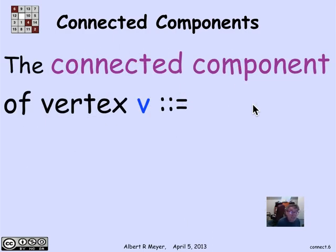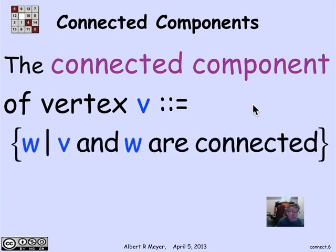The formal definition of the connected component of a vertex V is simply all of the vertices W that are connected to V. And if you look at these connected components, they define an equivalence relation on the vertices, because a connected component is a block of the equivalence relation. It's a block of the partition associated with the equivalence relation.